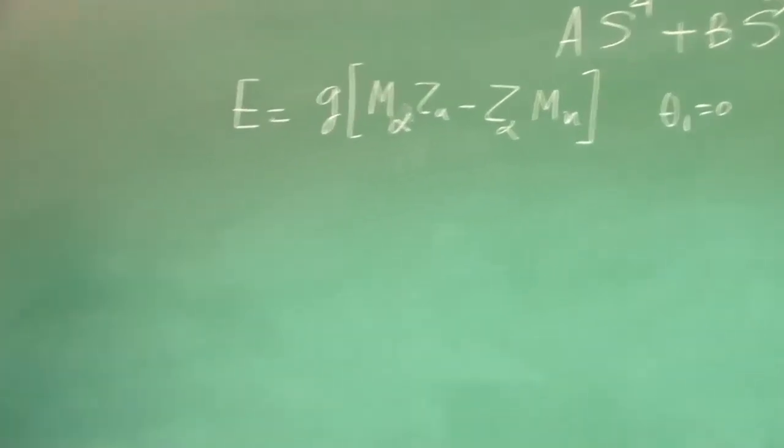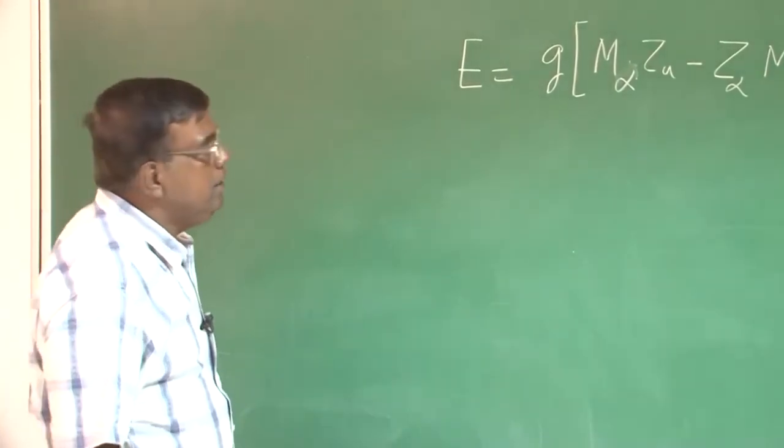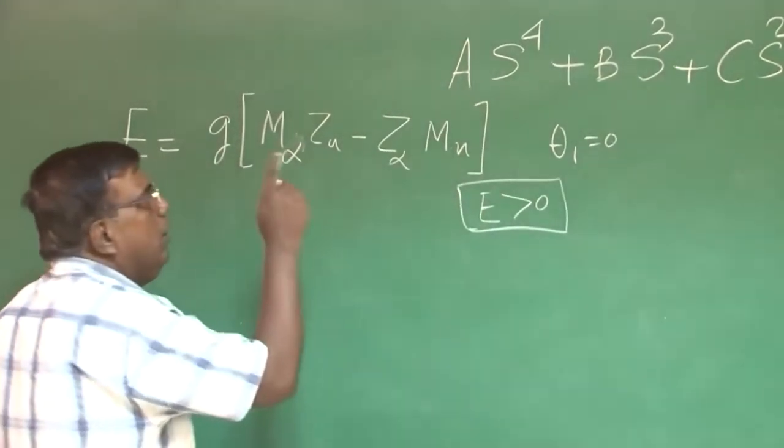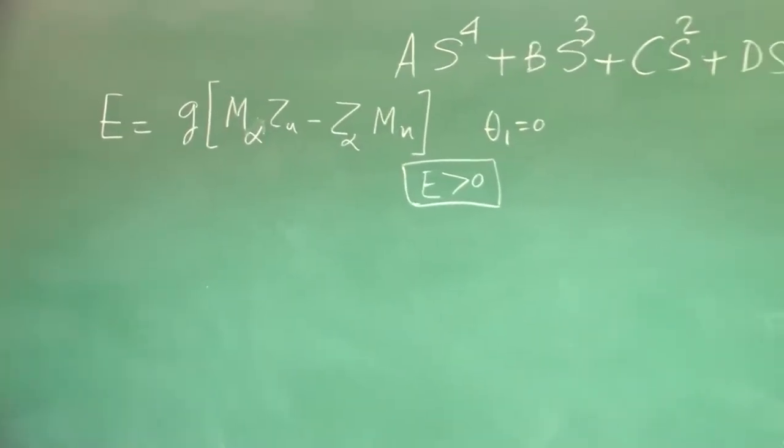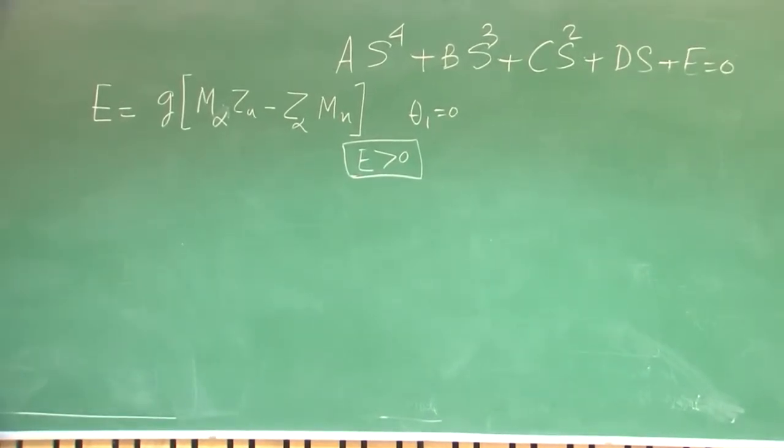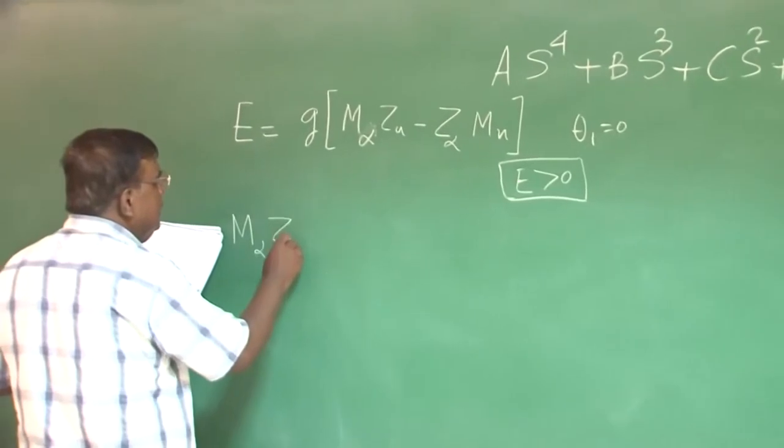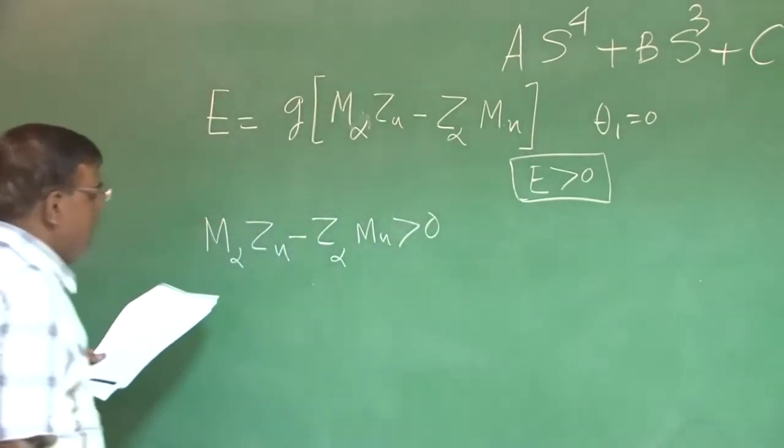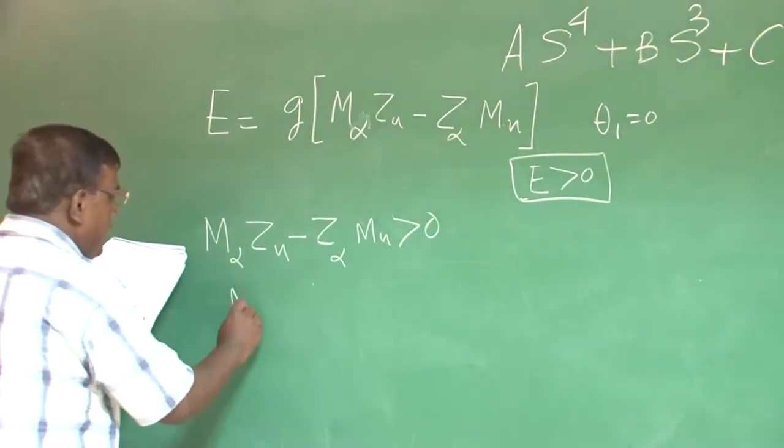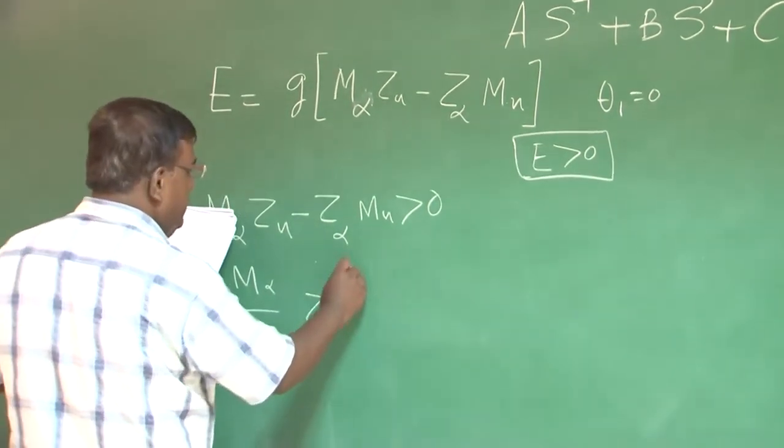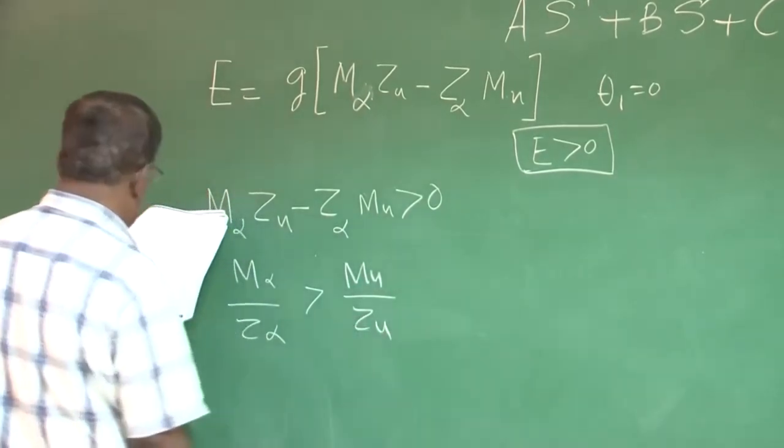Now let us try to extract some more information out of this E. What is the condition for Dynamic Stability? That E should be greater than 0. All A, B, C, D, E should be greater than 0. We are studying the case E greater than 0 and seeing whether we are getting some meaningful additional information or not. That means m_α z_u minus z_α m_u greater than 0, which means m_α by z_α greater than m_u by z_u.